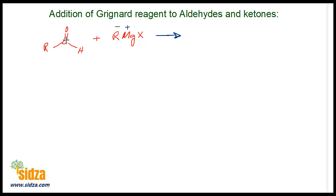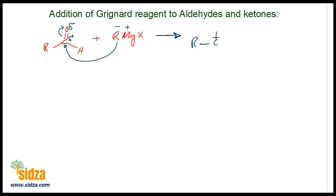There is a carbon-oxygen double bond and the carbonyl group is polar. It has a delta positive on carbon and a delta negative on oxygen. In a Grignard's reagent it is R negative and Mg positive. So R negative is a nucleophile. This nucleophile will add on the carbon and this electron pair will shift towards the oxygen. So you get R-C-O negative with an alkyl group from the Grignard's reagent and a hydrogen.